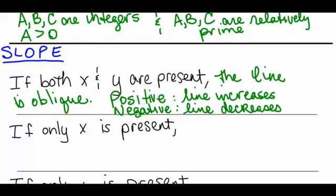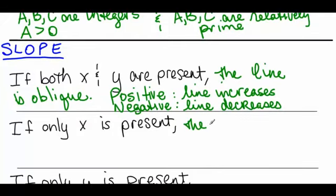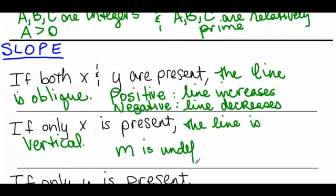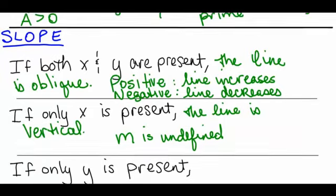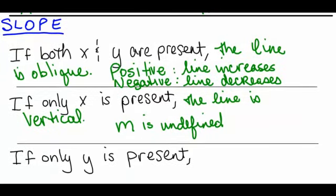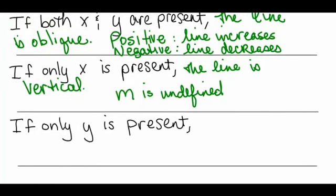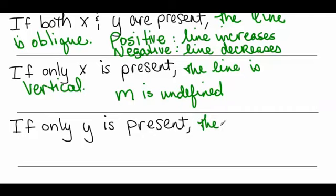If only x is present in the equation, the line is vertical, and all vertical lines have the same slope. M is undefined. This is just recapping from the last section, because we have to have all of this information in the forefront of our mind when we go to write the equation, which is our task in this section. If only y is present in the equation, then the line is horizontal, and all horizontal lines have the same slope. M equals zero.